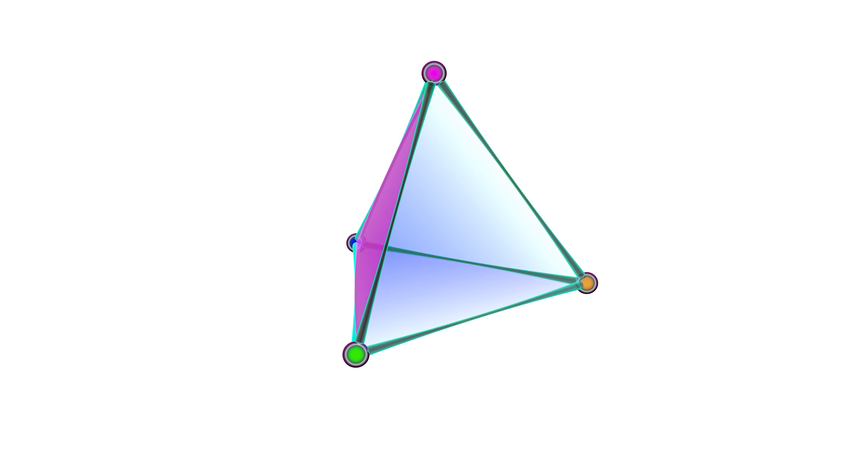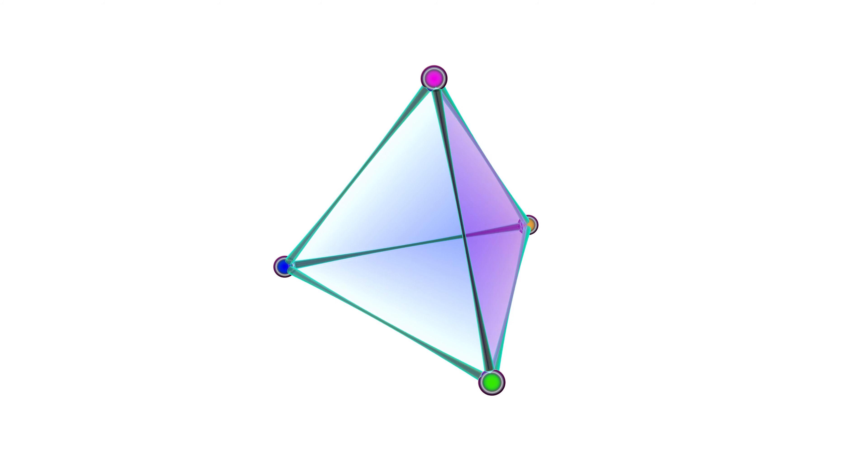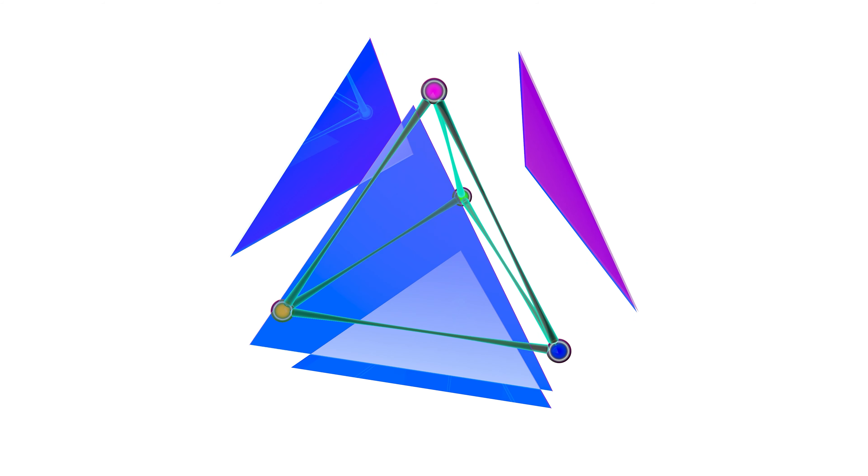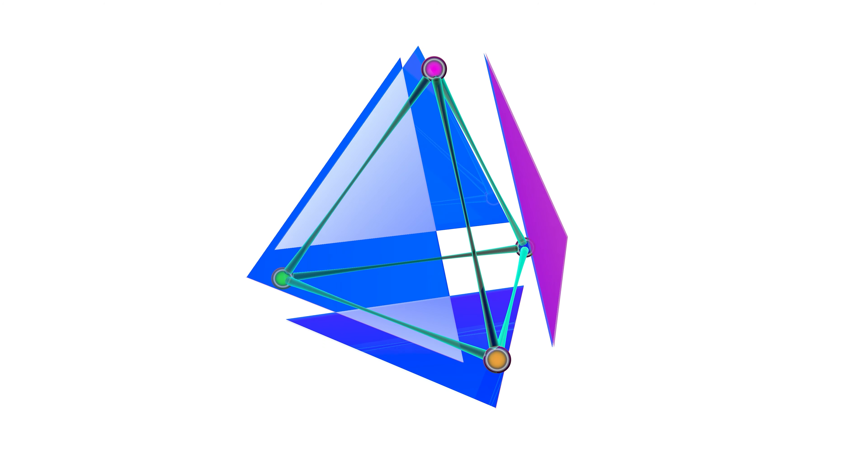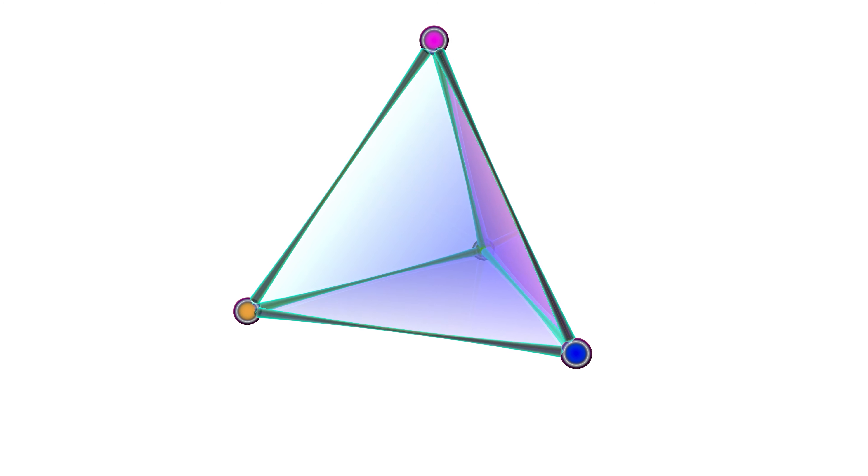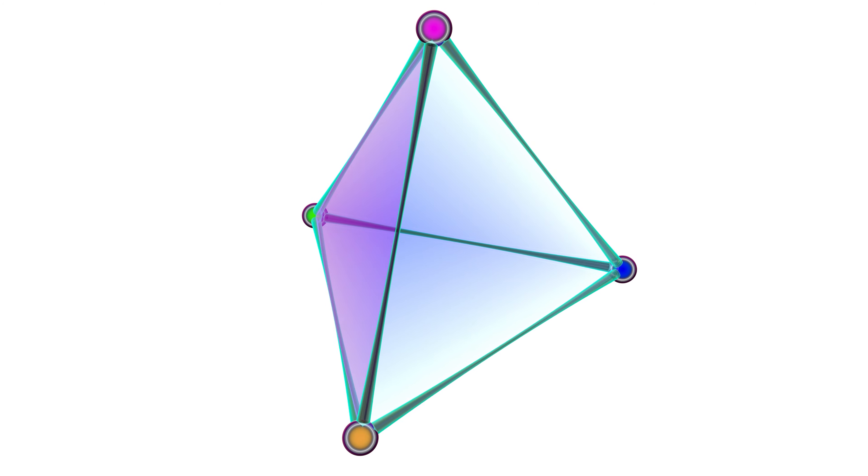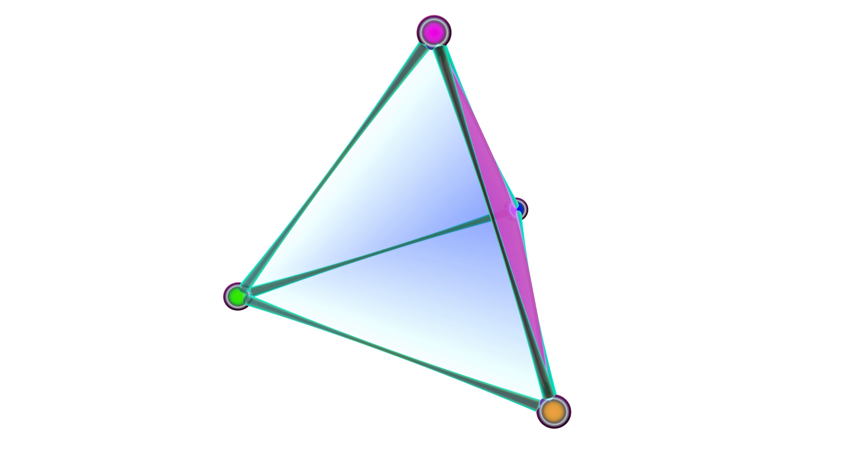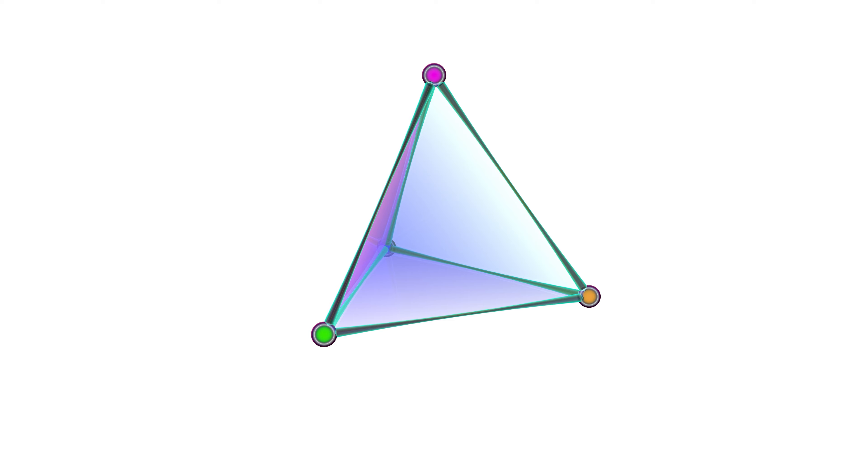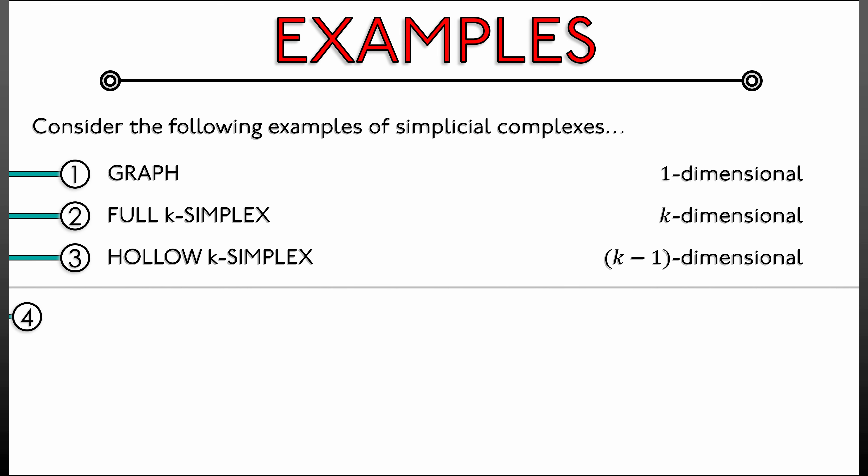Now, if we look at a hollow three-simplex, this consists of, let's see, one, two, three, four codimension one faces. That is four two-dimensional faces. And then we've got all the edges and vertices along with that. This looks like the boundary of a solid tetrahedron. And it is, in fact, an example of a simplicial complex that represents a two-sphere, a two-dimensional sphere, topologically.